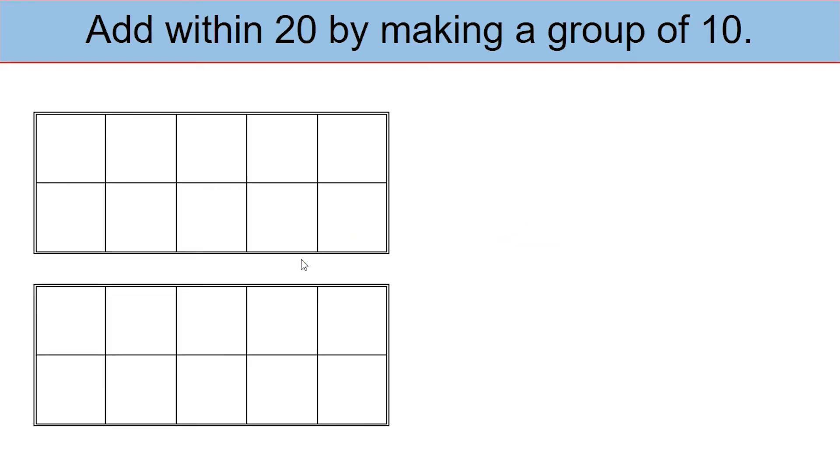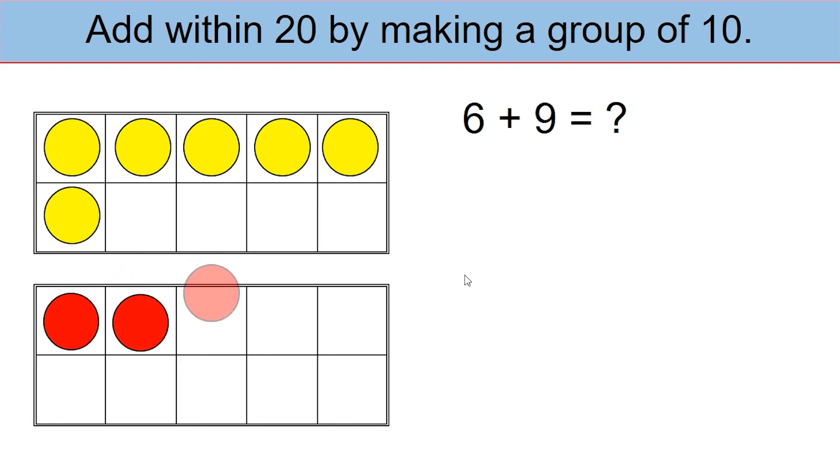Once again, in this case, use 2 of the tens frames. Let's look at the example 6 plus 9. As usual, in the first tens frame, place 6 of the yellow counters. In the second tens frame, place 9 of the red counters.